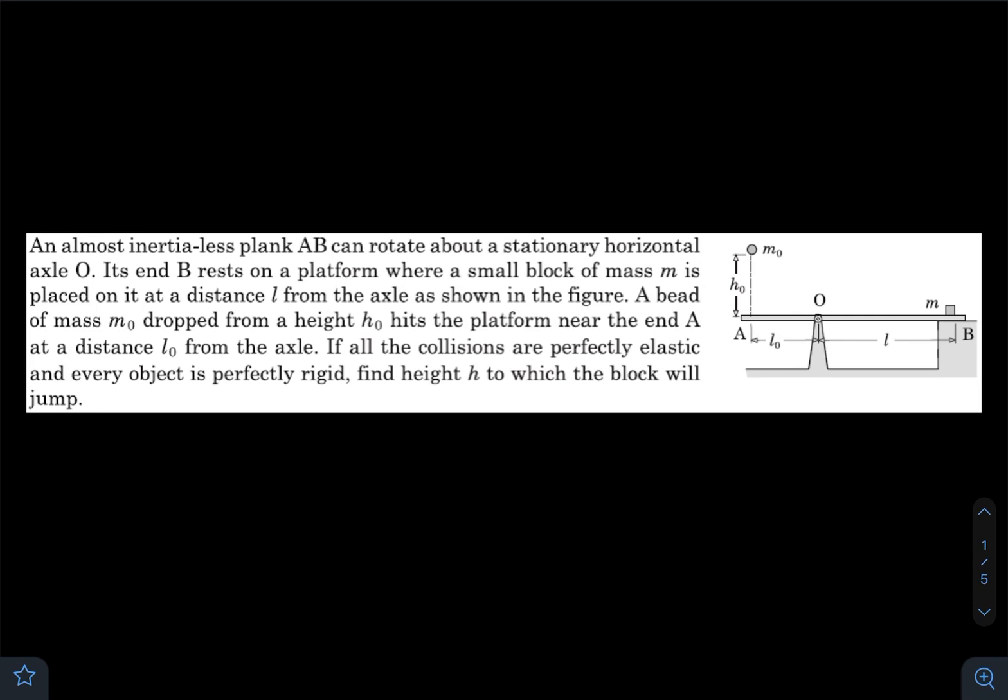In today's question, we have an almost inertialess plank AB that can rotate about a stationary horizontal axle O. Its end B rests on a platform where a small block of mass m is placed at a distance l from the axle, as shown in the figure.